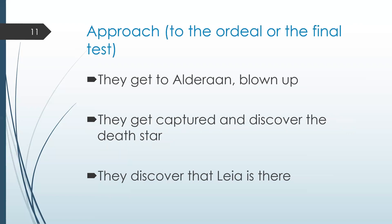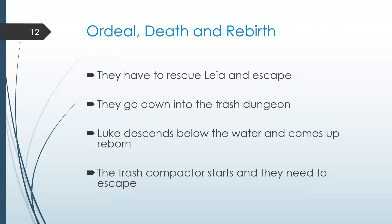As they approach the final ordeal, they head to the planet Alderaan, which is not there anymore — it's been destroyed. They discover the Death Star and get captured, then find out that Leia is a captive on the Death Star. The ordeal of Death and Rebirth is that they rescue her and must escape. They descend into a dungeon — the trash compactor — which almost kills them. Luke gets taken by a serpent underwater and returns to reemerge, and they all escape the trash compactor — a different kind of Death and Rebirth, but no less of one.